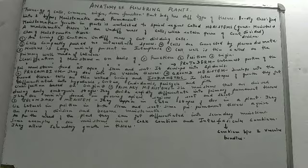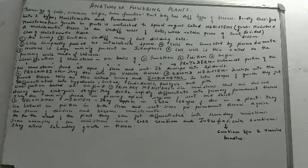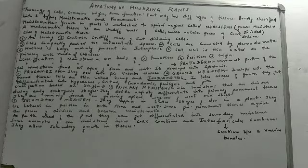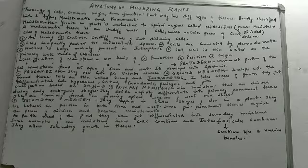To clarify: once your primary meristem has converted into primary permanent tissue, two things can happen — either the primary permanent tissue matures into secondary permanent tissue, or it regains the power of division and becomes meristematic again. Examples of secondary meristems are cork cambium and interfascicular cambium. Interfascicular cambium is the cambium found between two vascular bundles.